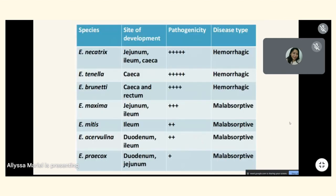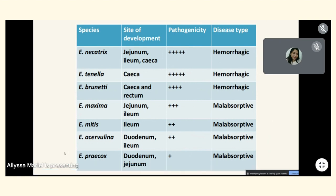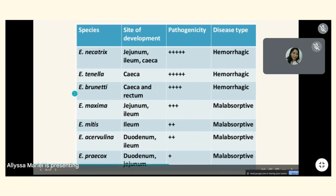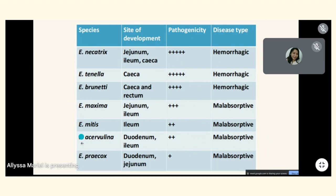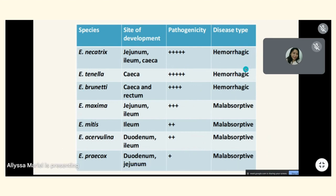A table shows the site of development, pathogenicity, and disease type of different Eimeria species. E. tenella and E. necatrix have the highest pathogenicity, followed by E. brunetti, E. maxima, E. mitis, E. acervulina, and lastly E. praecox. E. necatrix, E. tenella, and E. brunetti cause hemorrhagic disease, while the other four cause malabsorptive disease.